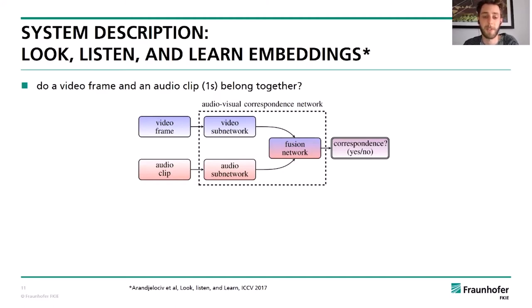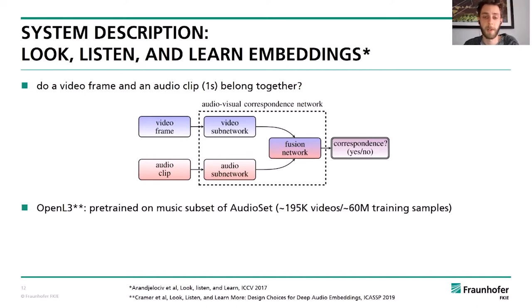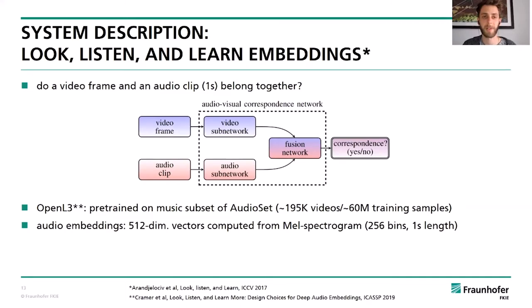The network itself consists of two subnetworks — a video subnetwork and an audio subnetwork, both convolutional neural networks — and an additional fusion network which takes the vector outputs of both subnetworks and decides whether they belong together or not. In our implementation we use OpenL3, which is pre-trained on a music subset of AudioSet. In this talk, Look, Listen and Learn embeddings always refer to the audio embeddings, which are 512-dimensional vectors output by the audio subnetwork.